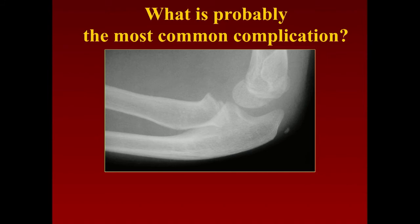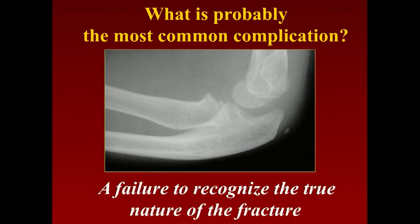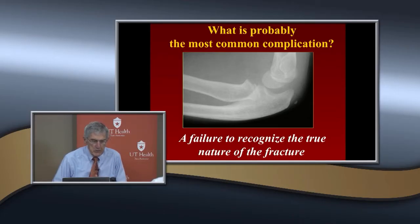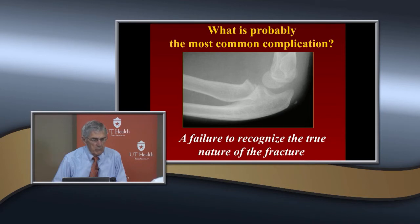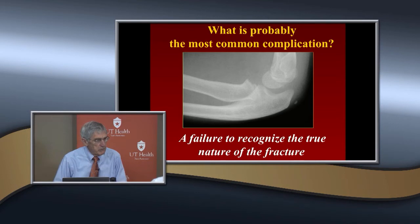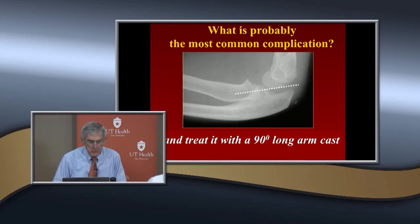The most common complication of Type 2 is failure to recognize it as a Type 2 lesion and treating in flexion. Here's a patient seen years ago — not recognized at the time of injury. This patient subsequently lost supination and pronation due to rotational and angular deformity, requiring two osteotomies of both the ulna and radius to correct.